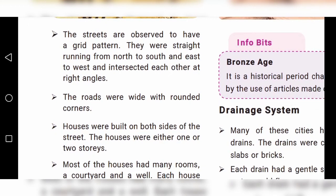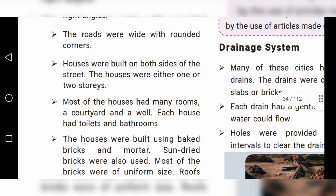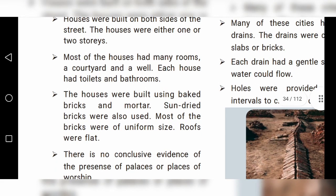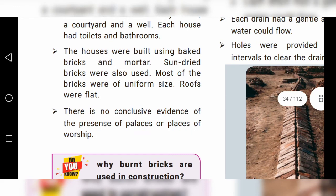The roads were wide with rounded corners. Houses were built on both sides of the street and were either one or two storeys. Most houses had many rooms, a courtyard, and a well. Each house had toilets and bathrooms. Houses were built using baked bricks and mortar; sun-dried bricks were also used. Most bricks were of uniform size, and roofs were flat. There is no conclusive evidence of the presence of palaces or places of worship.